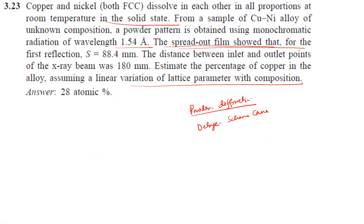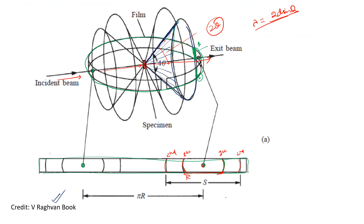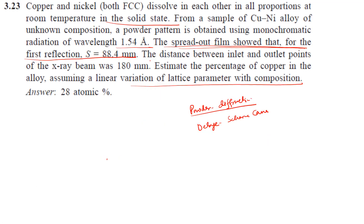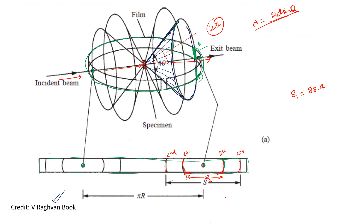In this question, the spread-out film shows that for the first reflection, s = 88.4 mm. This distance s is the separation between the two arcs of the first reflection. The distance between the inlet and outlet points of the x-ray beam corresponds to half the circumference of the film, so that distance = πr = 180 mm.